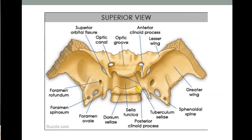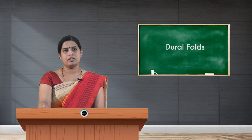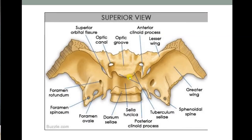At the center — the body of the sphenoid bone — there are two elevations: tuberculum sellae in front and dorsum sellae behind. The extension from the dorsum sellae is called the posterior clinoid process. In between the tuberculum and dorsum sellae there is a fossa called the hypophysial fossa, or pituitary fossa, for the lodging of the pituitary gland.